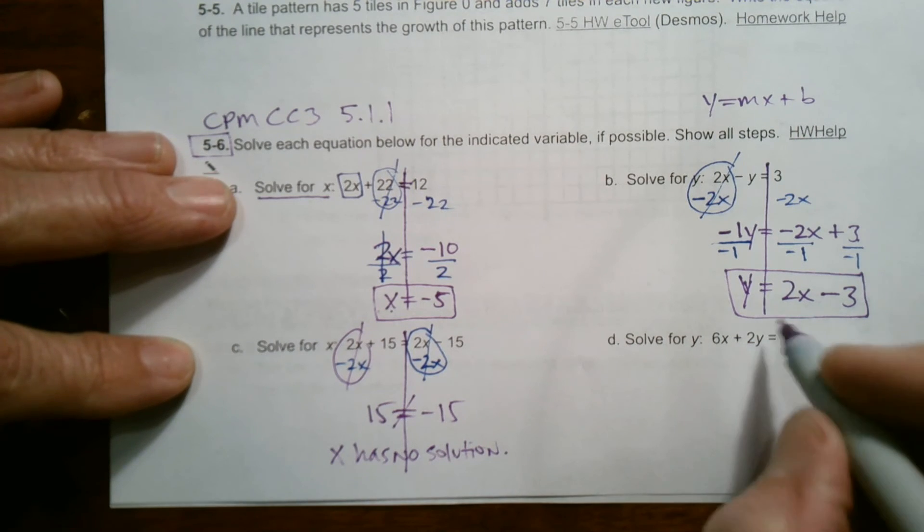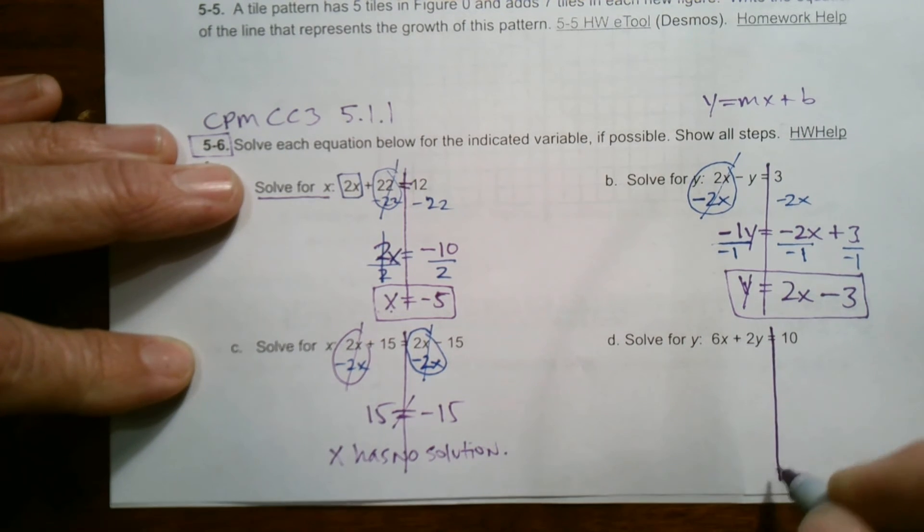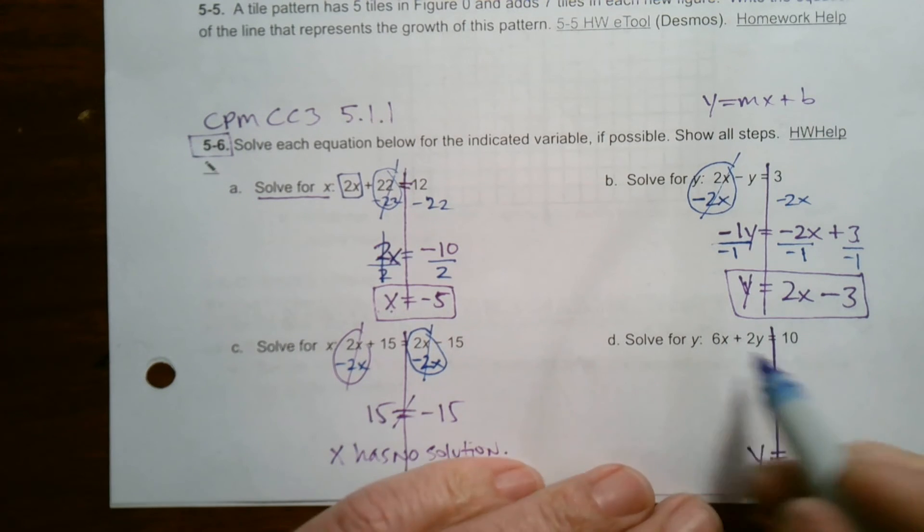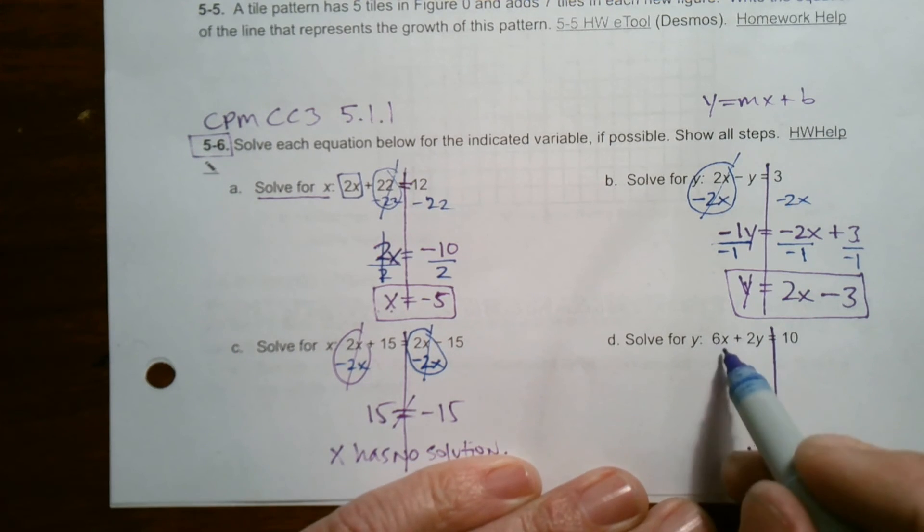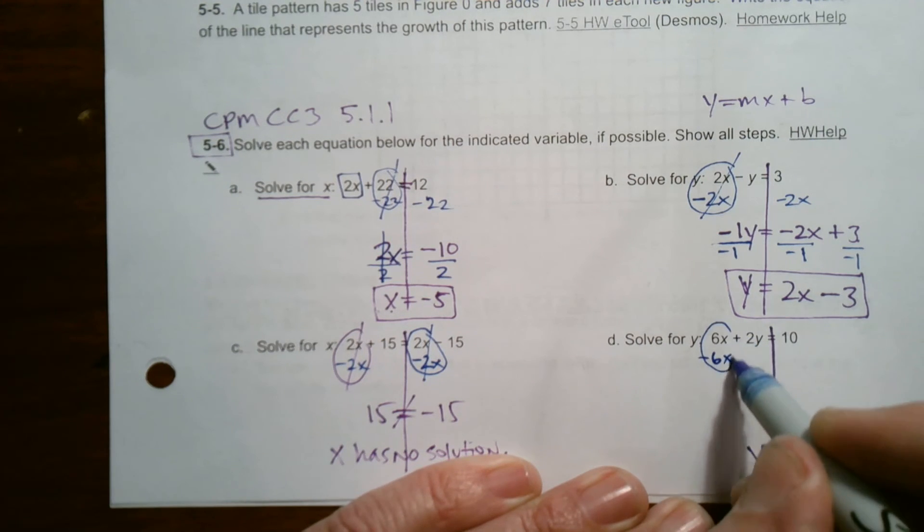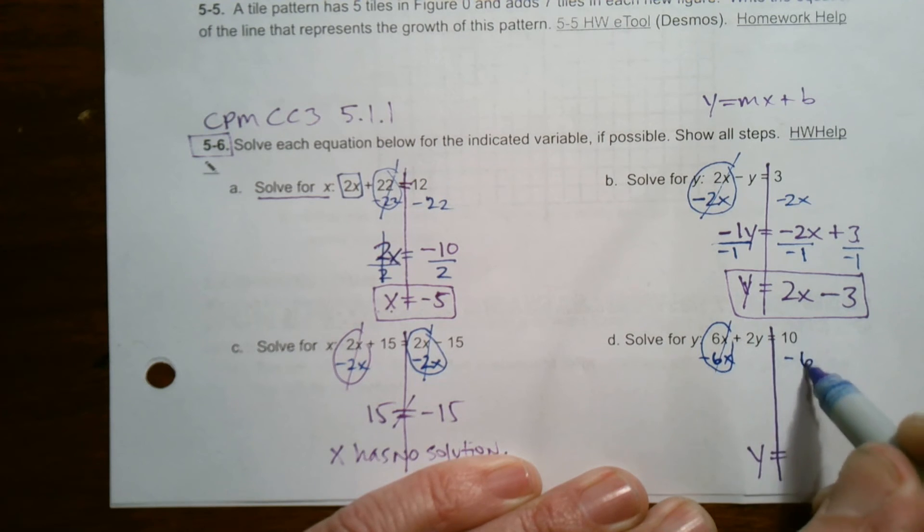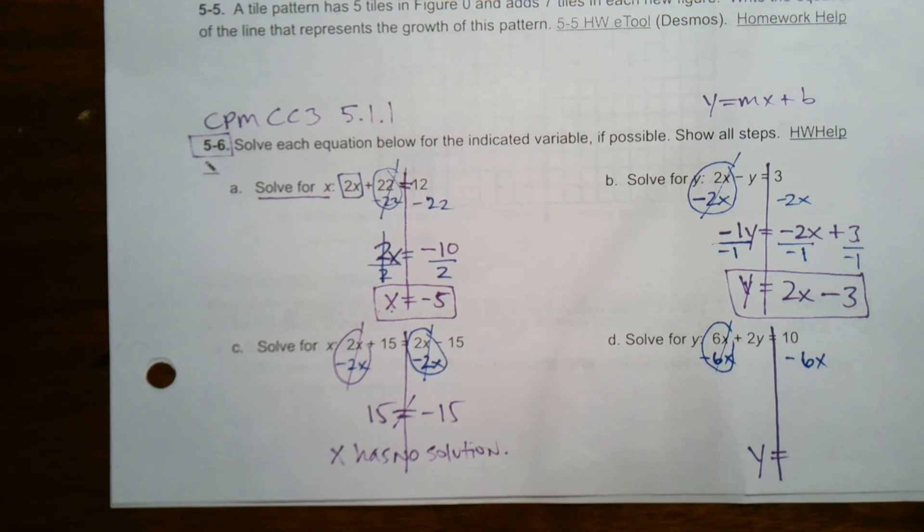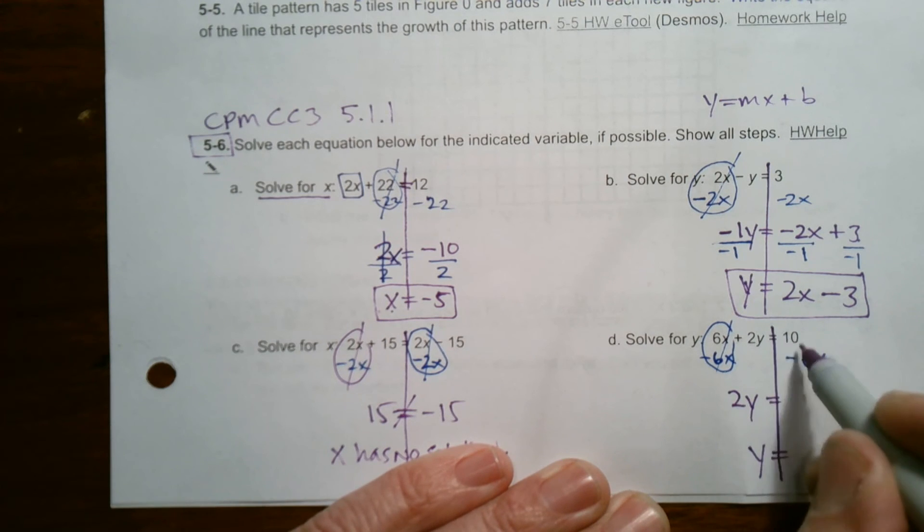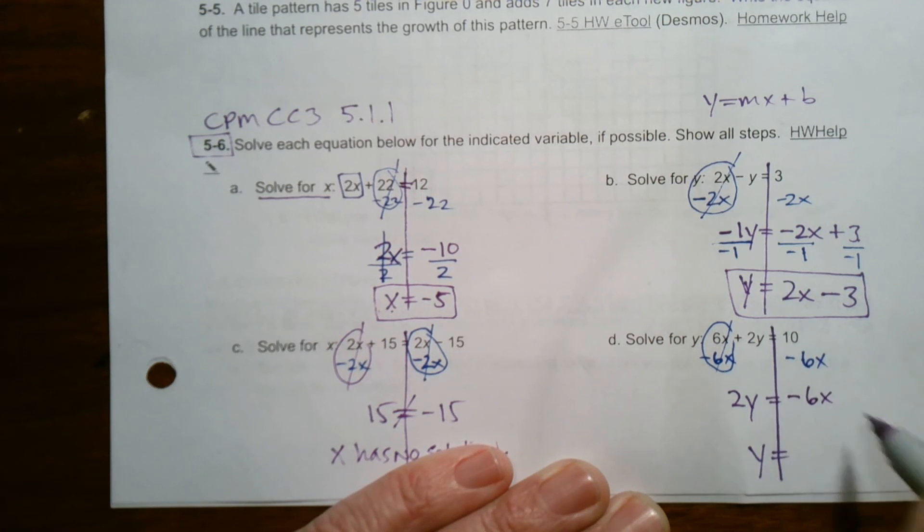Last one, D, solve for y. So once again, this is a situation where I want to get y alone. So I need to get rid of this 6x. Get it over here because I want y alone. So I'm going to subtract 6x from this side. That gets rid of it from that side. Subtract 6x. And what am I left with? Over here, I'm left with a positive 2y is equal to, and I have a 10 minus 6x. They can't combine. So I've got to write them separately, but I always put the variable term first, negative 6x plus 10.